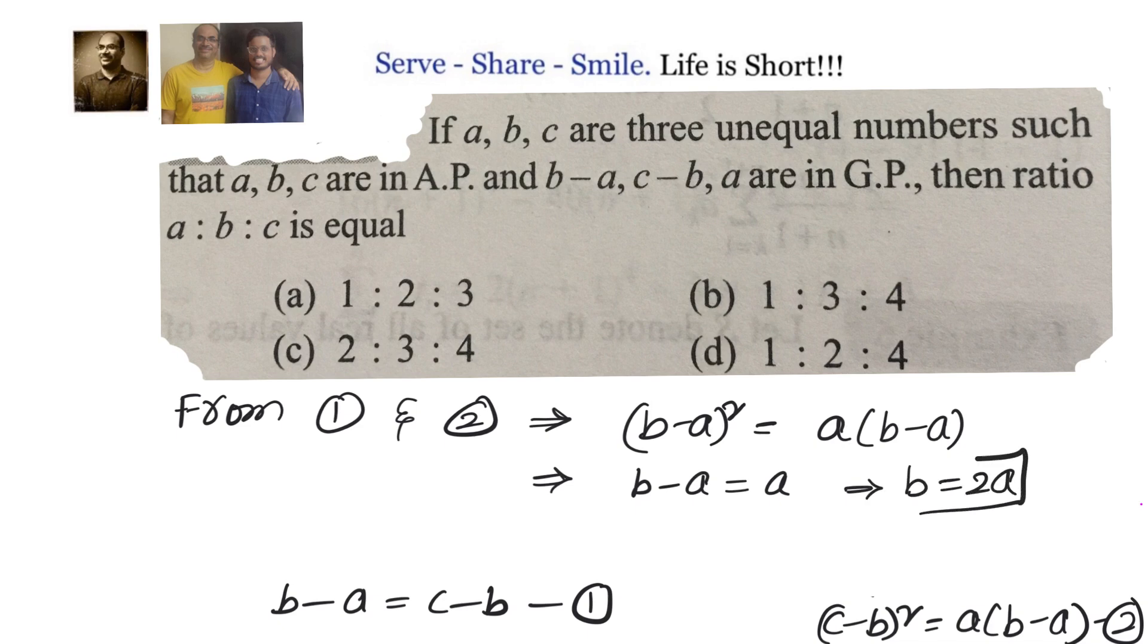Once we got B equals 2A, now the idea is to get C in terms of A. So let us go to the first equation and write down B minus A equals C minus B, that means C equals 2B minus A. But we know B equals 2A, so C equals 2 times 2A minus A, that is equals 3A.